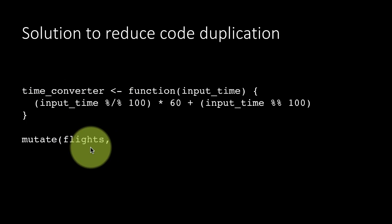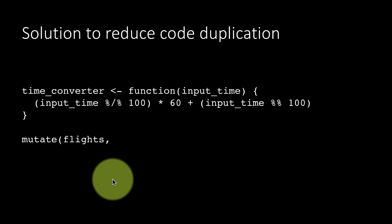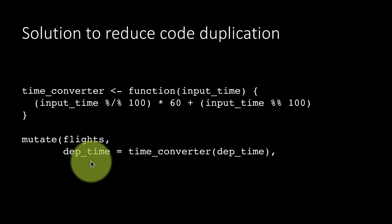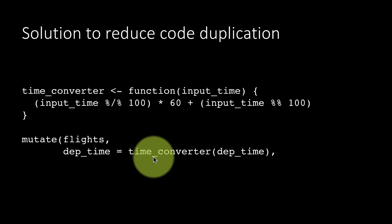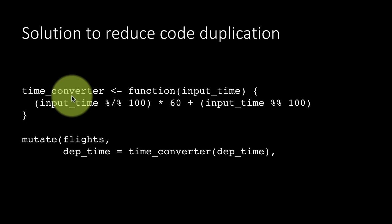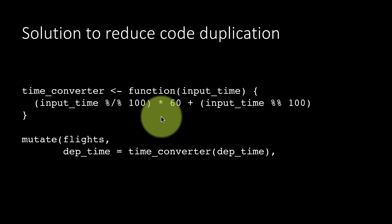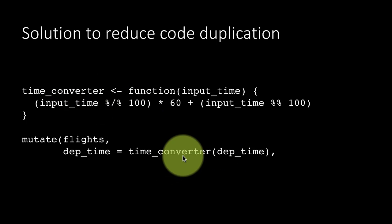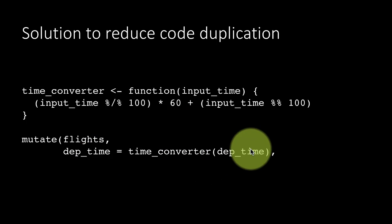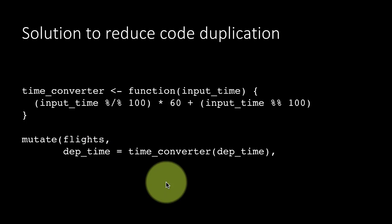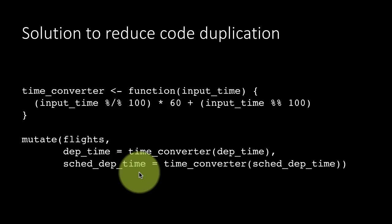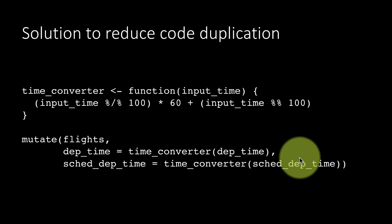So now with this function in place, we can write the following. We can say mutate flights, departure time equals time_converter departure time. So we are using this time_converter function just as if it was a function given to us by R. Now this is a user-defined function. So we are passing the departure time as an argument. So if you pass 517, this will get converted into 317 and that will get assigned to departure time. Scheduled departure time, same thing, except we pass scheduled departure time as an argument.